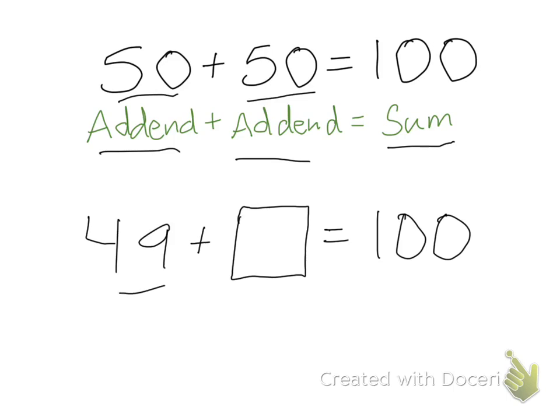Here I have 49 plus something equals 100. Since I know that 50 plus 50 equals 100, that means that 49 plus 51 has to equal 100, because I took one away from this, so I need to add one to this side.